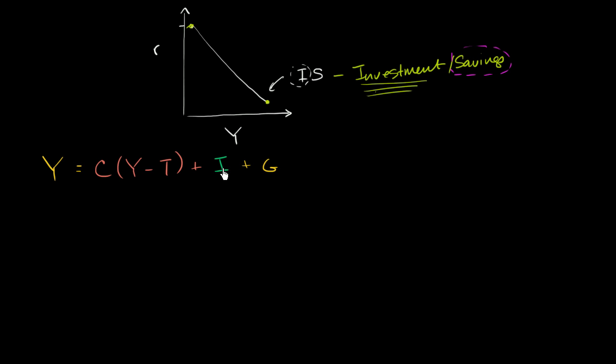Now what I want to do is solve for investment. So if I solve for investment, I'm just going to subtract this piece and this piece from both sides of this equation, and I get aggregate income minus total aggregate consumer spending minus total government spending is equal to investment right over here.